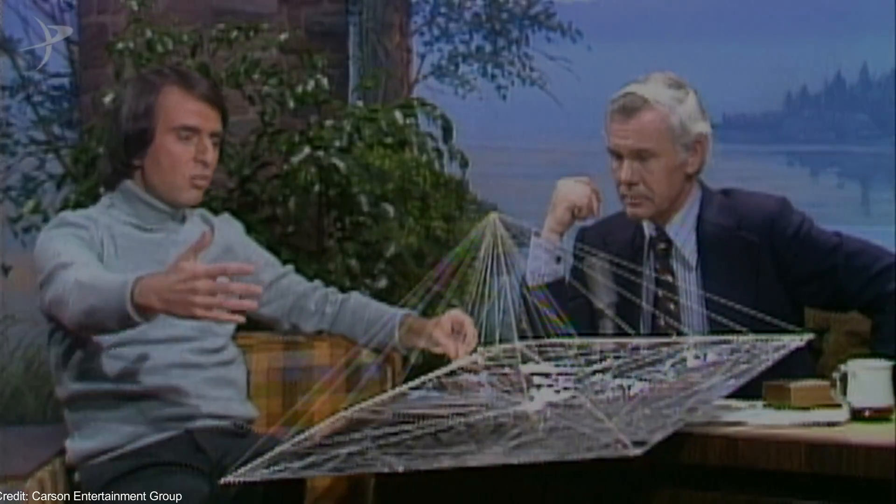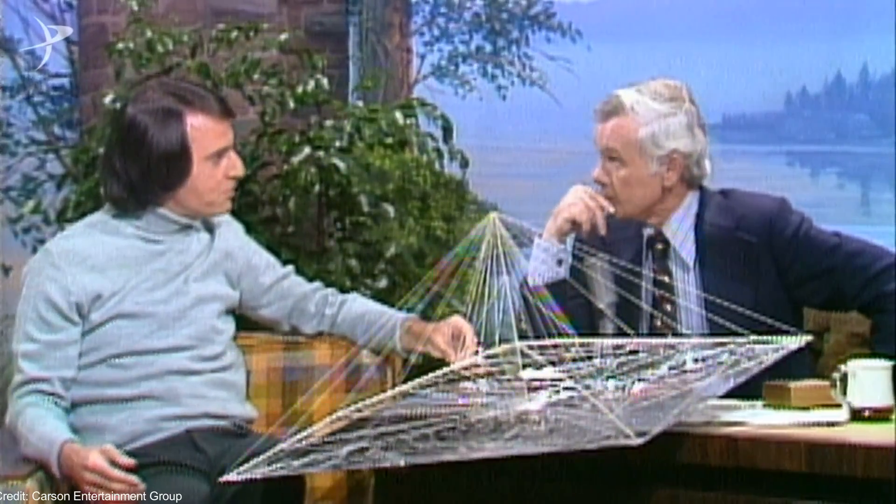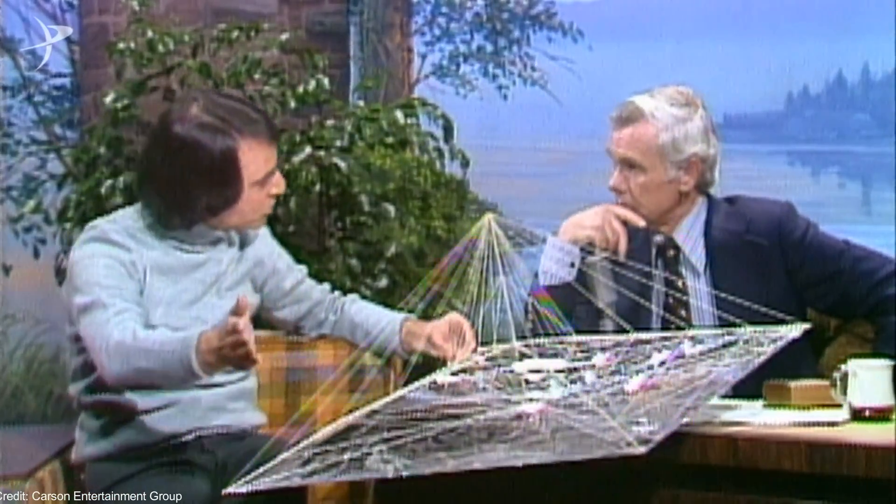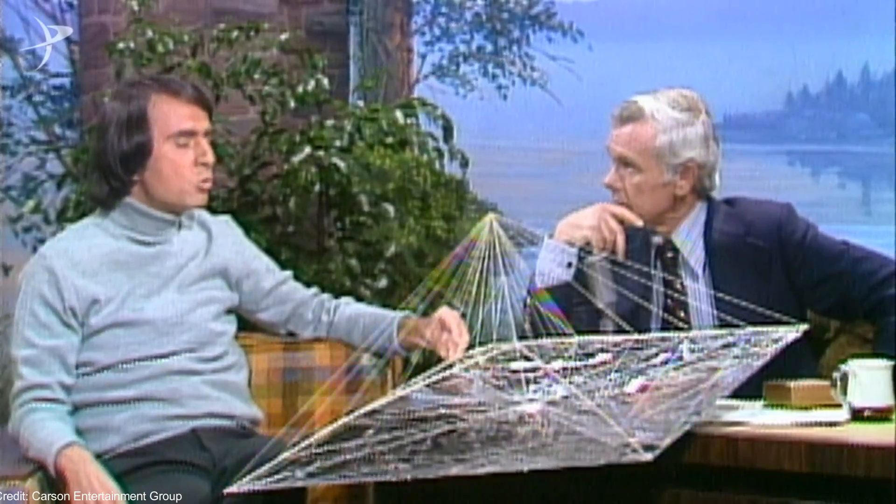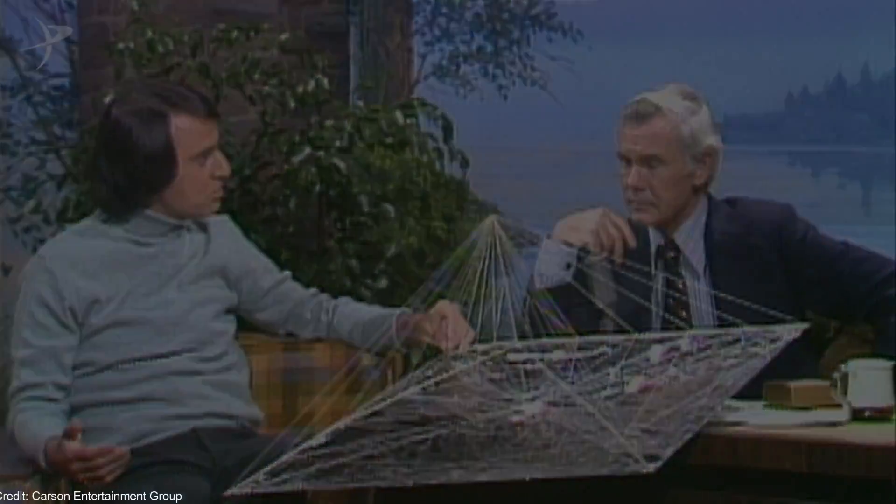It travels on the radiation and particles that come out of the sun, the wind from the sun. And it works exactly as an ordinary sailboat does, so it can go out from the sun, it can tack inwards to the sun, and because it has a constant acceleration, it can get you around the inner part of the solar system a lot faster and a lot more conveniently.